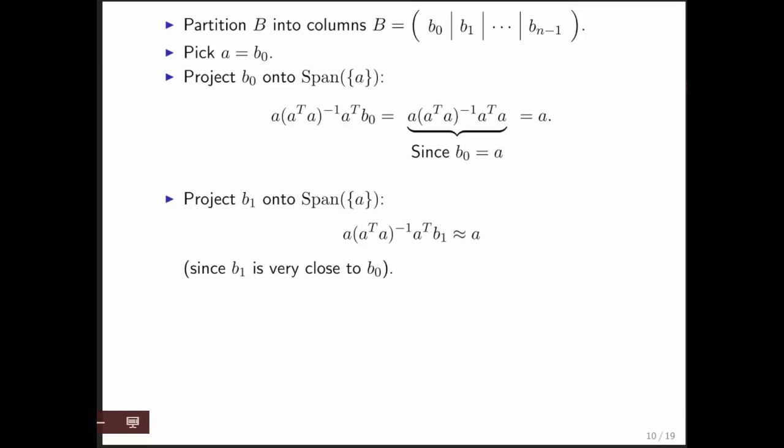Now, if instead you take the next column, then what you would expect when you project that is to get a vector back that's very close to A. Why? Because we observed that B1 was very similar to B0. A is just the vector B0. And therefore, you would expect if you project B1 onto the vector A, you would get approximately A back. And actually, you would get approximately B1 back, because they're so similar.